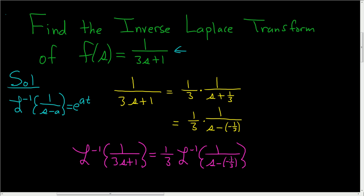And now we can apply the formula. Here a is equal to negative 1 third. It's s minus a, and so this is 1 third e to the at, and a is negative 1 third, so this is negative 1 third t. And that's the final answer.